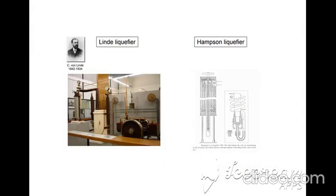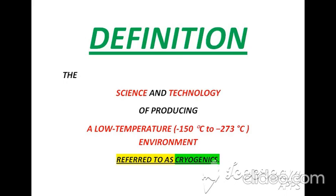The next diagram is of an apparatus called the Siemens-Linde apparatus, and the next one is also an apparatus called the Pictet apparatus. Here two liquefiers are available which convert a gas into liquid. According to the definition of cryogenic, it is the science and technology that produces a low-temperature environment with temperatures between negative 150°C and negative 273°C.